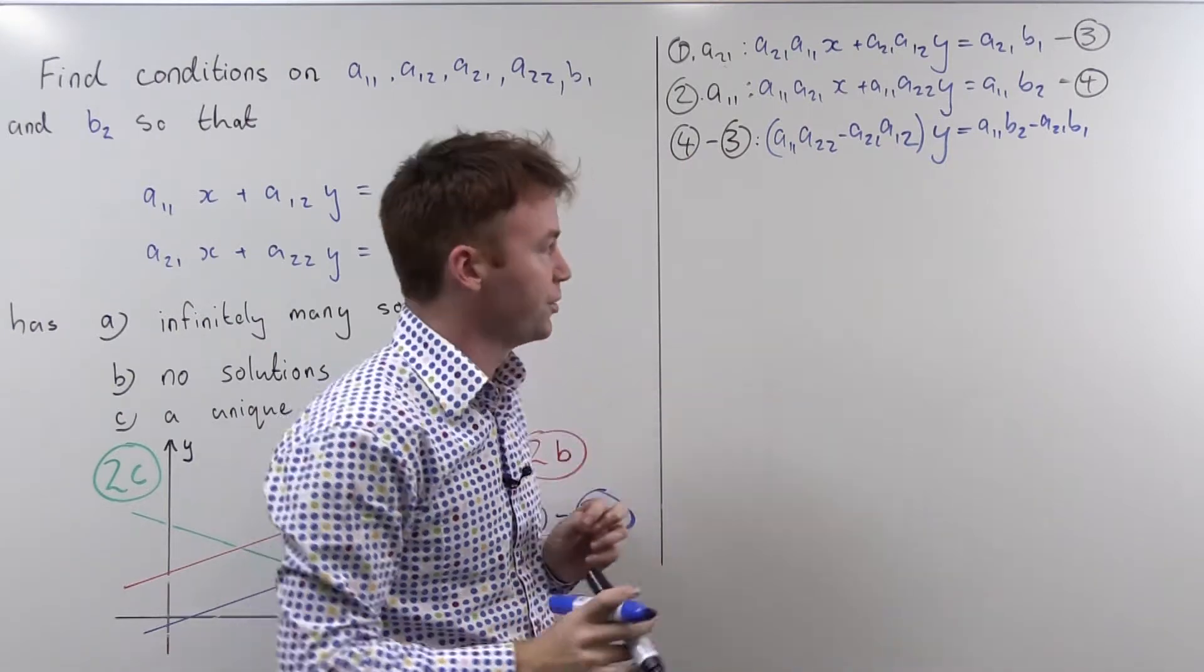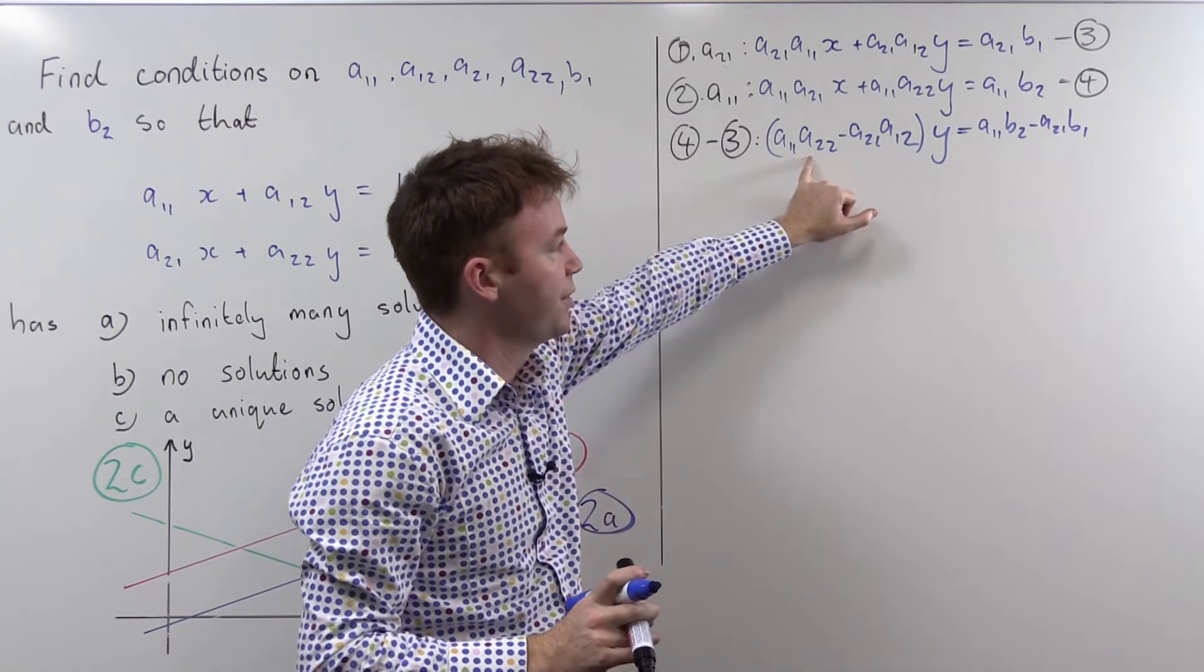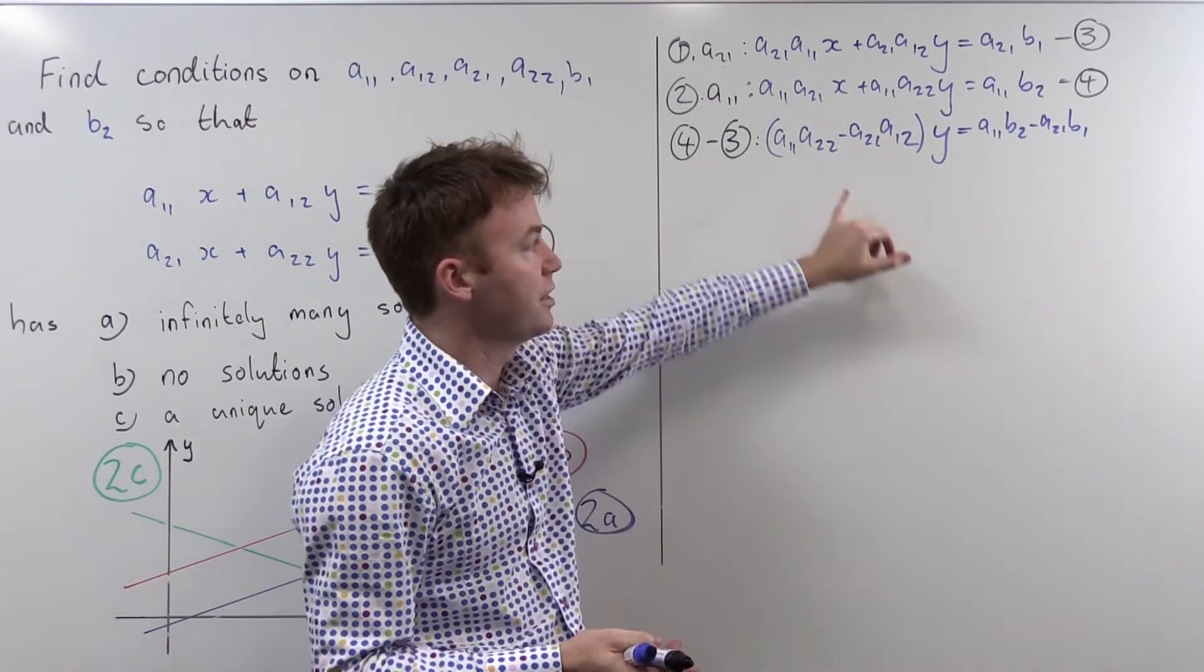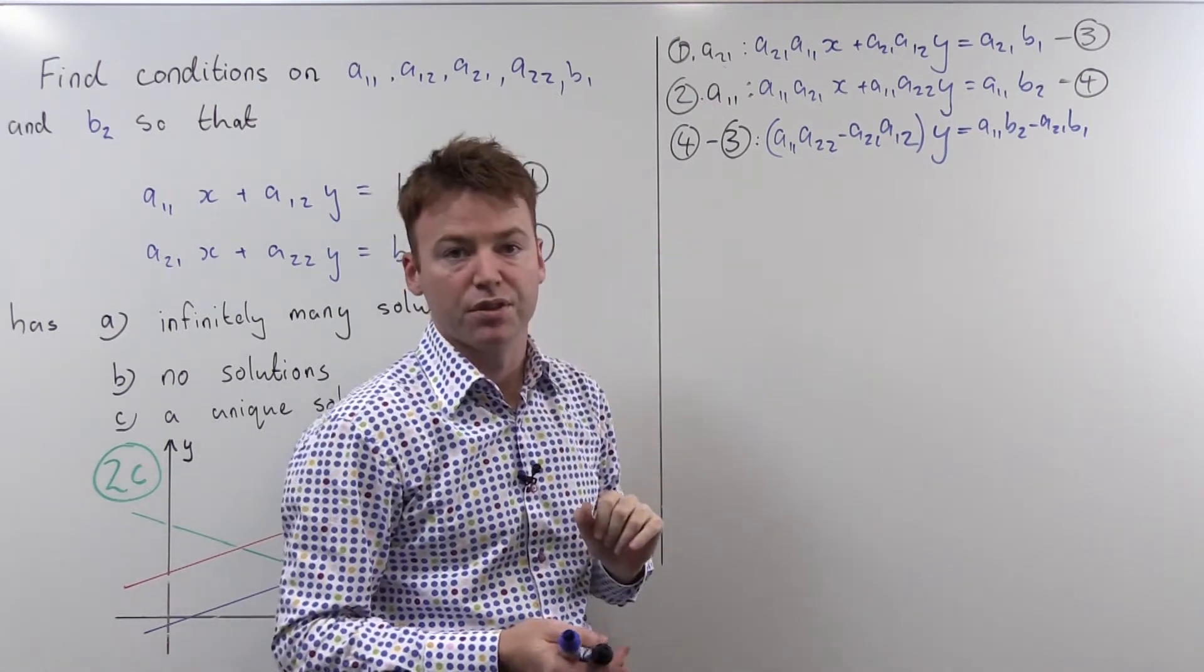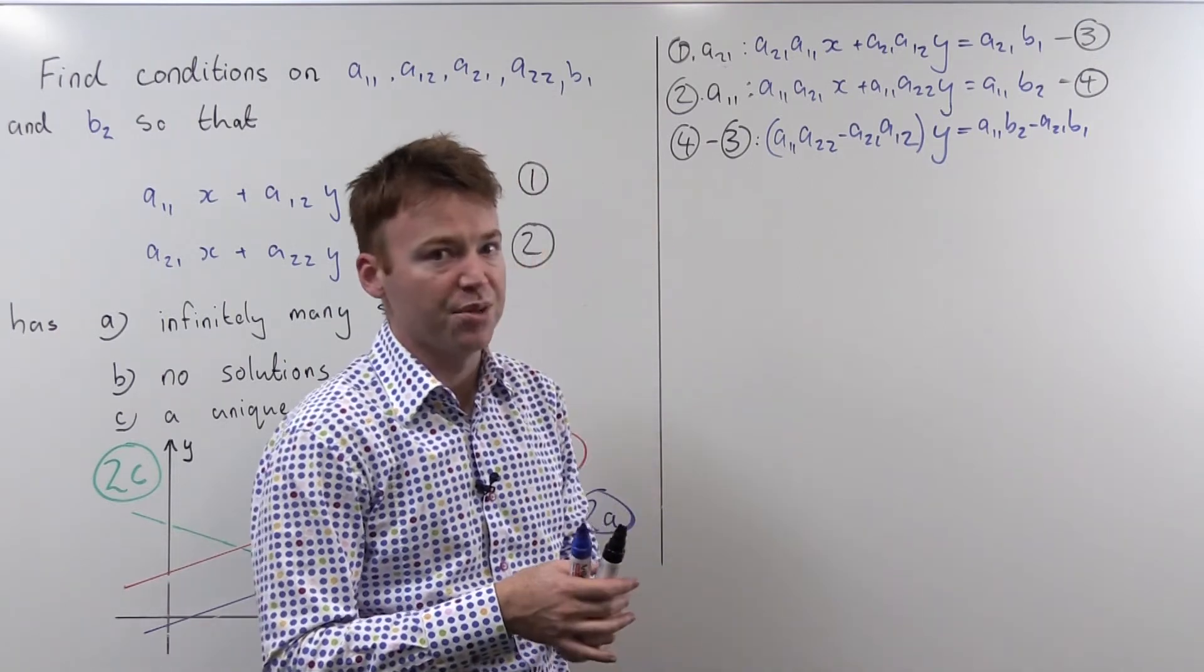We are very close to having solutions. There are some things that could get in our way. In particular we need to be very careful about what happens if this is equal to zero. In fact this is a very important quantity called the determinant and it tells you a lot about your system of linear equations as we're about to see.